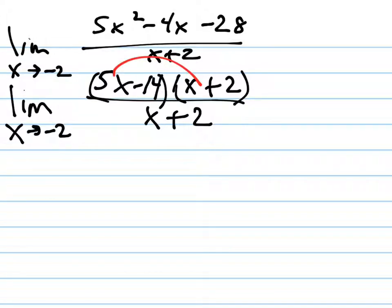5x times x is 5x squared, check. 5 times 2 is 10 minus 14. What's 10 minus 14? Negative 4, check. Negative 14 times 2 is negative 28. Hey, it worked.